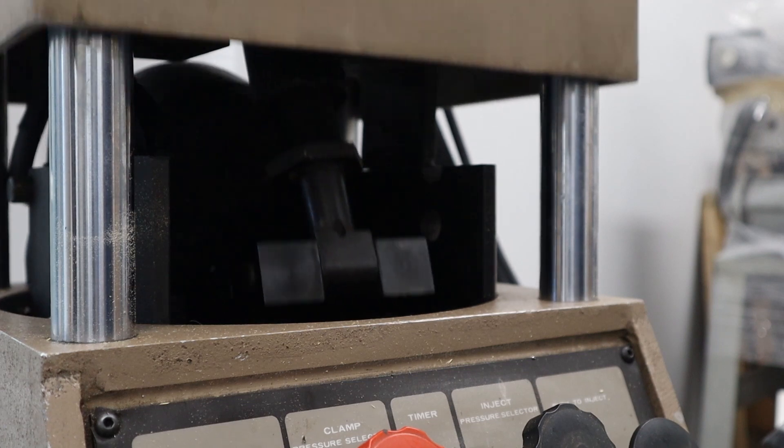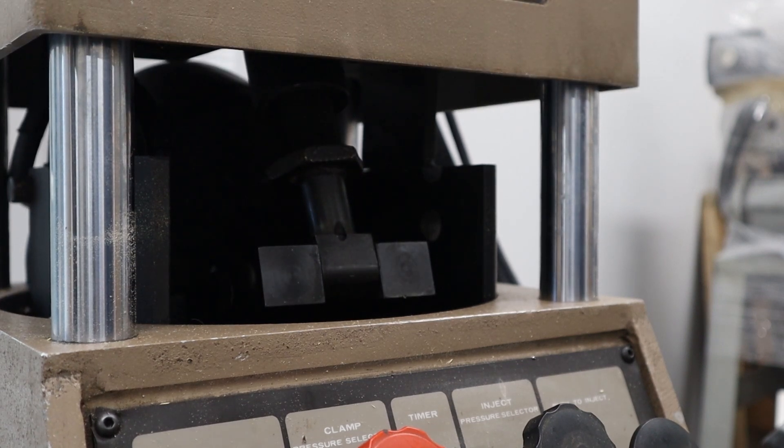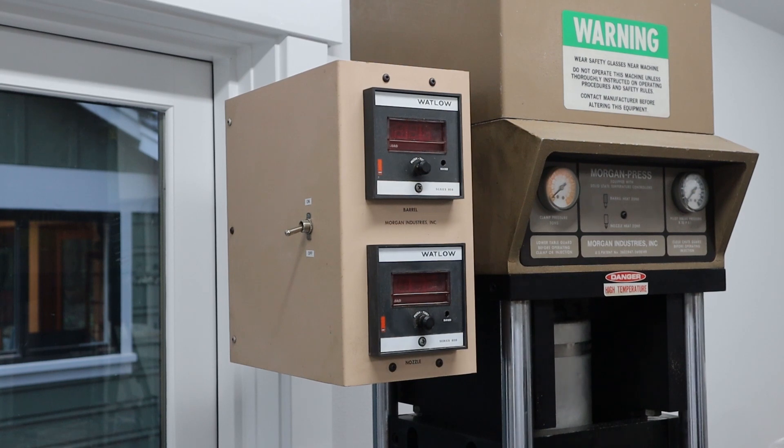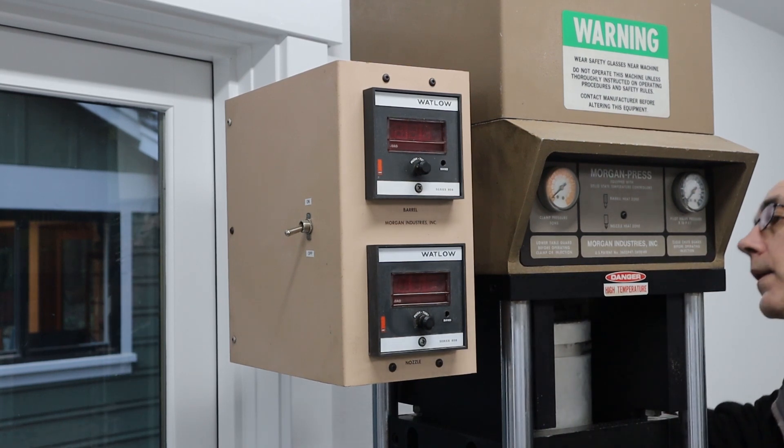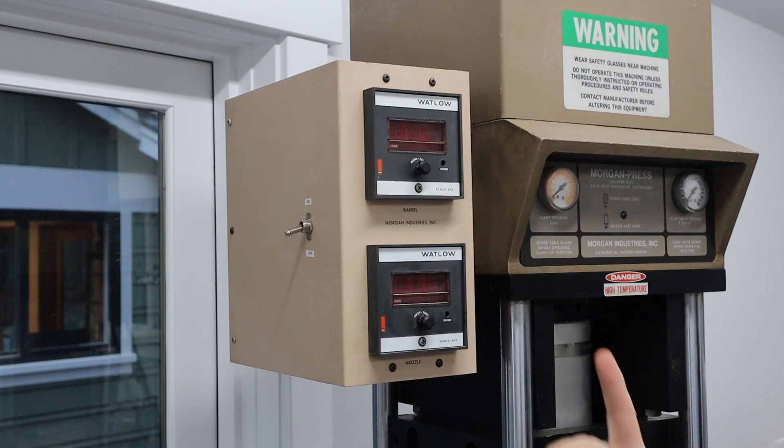So now that I have the clamping force set, what I'm going to do is put some plastic in here and get it set up so that I can actually inject something in this test mold. I plug the machine into the wall. So I'm going to turn it on.